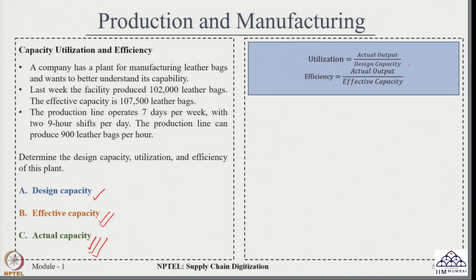When we look into the formula for utilization, utilization is given by actual output divided by the design capacity. Efficiency is calculated as actual output divided by effective capacity. The numerator remains the same, which is actual output, but the denominator changes for utilization versus efficiency.